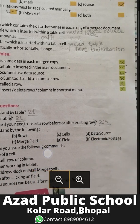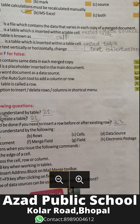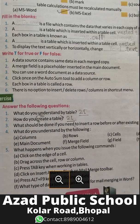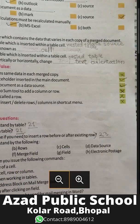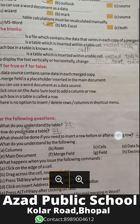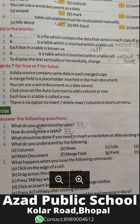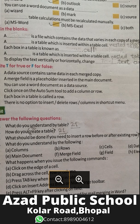You can use a Word document as a data source, and in MS Word, table calculations must be recalculated manually. Fill in the blanks: a data source is a file which contains the data that varies in each copy of the merged document. A nested table is the second answer.